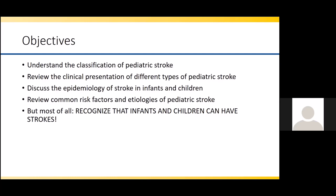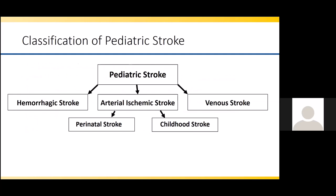We won't be covering outcomes and treatment in this module, but we'll be talking about that in the second of this two-part series. Starting with the classification of pediatric stroke, we divide pediatric stroke into a few different categories. Falling within the umbrella of pediatric stroke is intracranial hemorrhage, arterial ischemic stroke, and venous stroke. The focus of today's talk will be on pediatric arterial ischemic stroke, which we further categorize into perinatal stroke and childhood stroke.